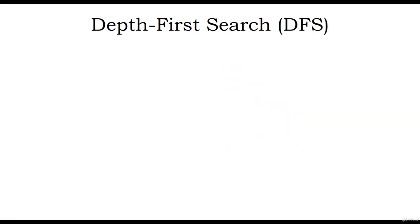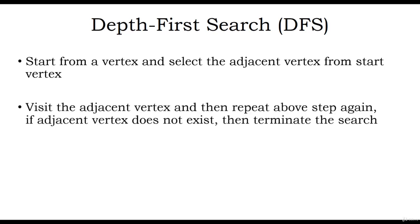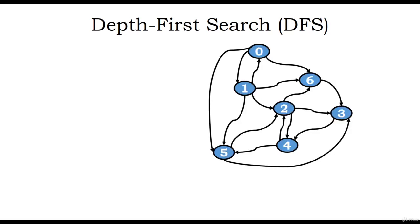We will now look at how depth first search algorithm works. DFS starts from a vertex and selects the adjacent vertices from the start vertex. It visits the adjacent vertex and then repeats the above step again until there are no adjacent vertices and the search terminates. We will look at the working of DFS by taking an example of the same graph. The start vertex will again be vertex 0, and we will have a list known as visited with all the vertices.